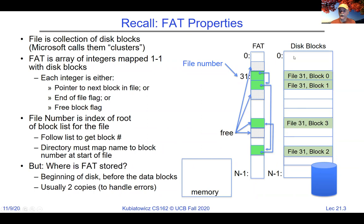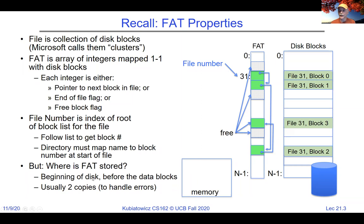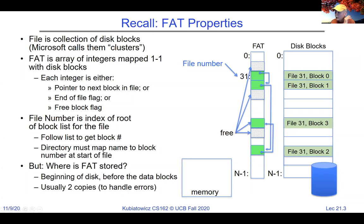It's in all your cameras and USB keys that you pass data around with. The FAT structure, which is essentially an array of integers, is stored at a well-defined place on the disk — the beginning — usually with a couple of copies to handle errors. You can format a USB key to other file systems, but the reason most cameras use FAT is that it's so simple it's easy to put into firmware.